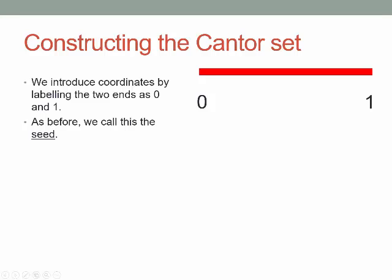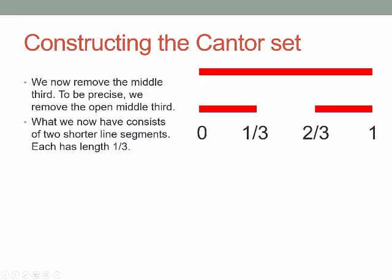What we do at first will sound extremely simple: we take out the middle third. We're working with the line segment going from 0 to 1, so the middle third is between the numbers 1/3 and 2/3. We remove all of those points. To be precise, we're removing the open middle third — all the numbers strictly between 1/3 and 2/3. But 1/3 itself will still be there and 2/3 will still be there. So we take out the middle third, and what we're left with are the other two-thirds: a closed segment from 0 to 1/3, and another from 2/3 to 1. We now have two shorter line segments, each of length 1/3.